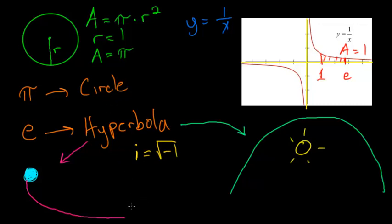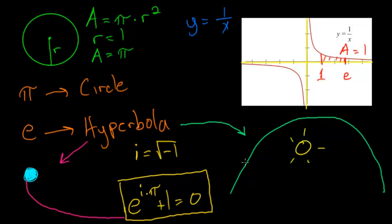The famous Euler's identity, e to the i times pi power plus 1 is equal to 0. And this identity is considered by mathematicians to be the most beautiful equation in all of mathematics.